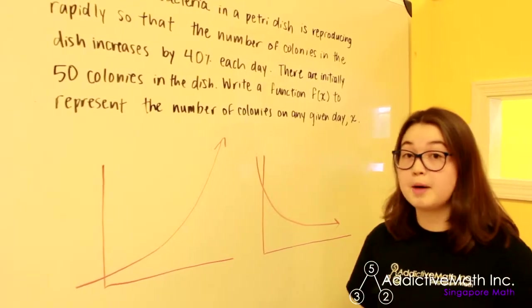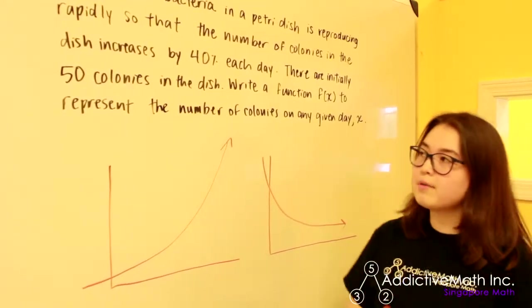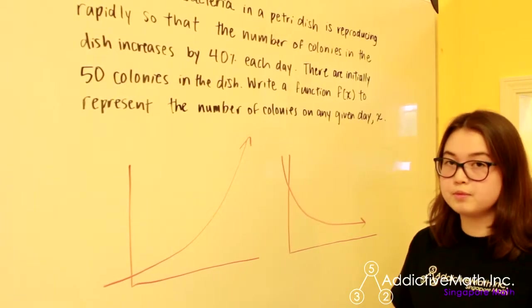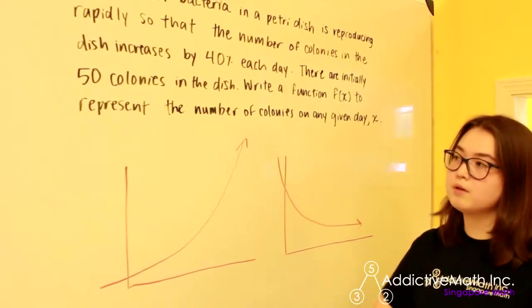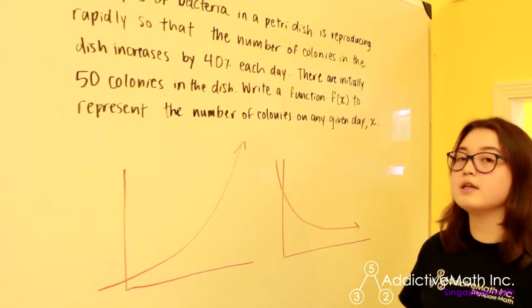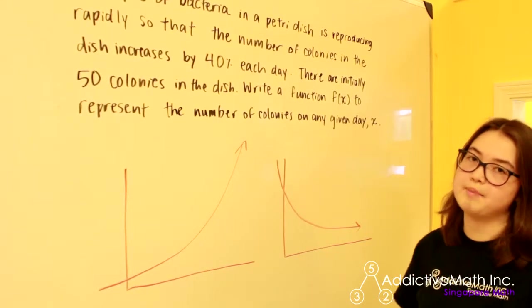For example, if you have a population of rabbits, you might have one rabbit that has two babies, but then each of those two babies have two babies. And so it grows rapidly. It doesn't grow in a linear manner. You don't add one rabbit per day.